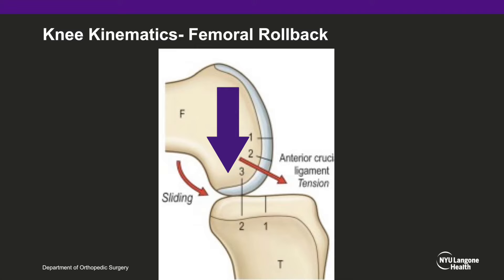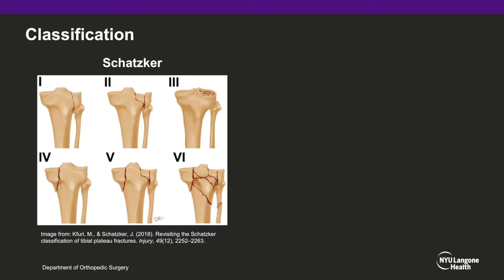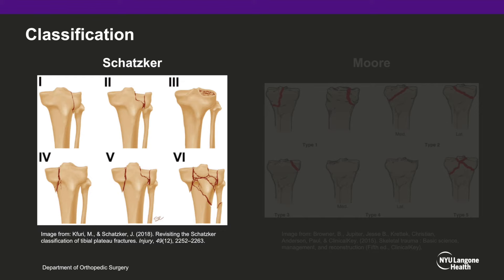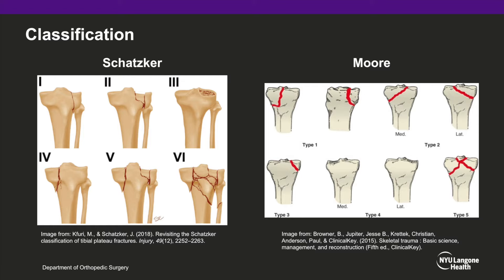The most common classification used for tibial plateaus is the Schatzker classification, based off AP radiographs of the knee. Schatzker type 1 is a lateral plateau split fracture; type 2 is a lateral split depression fracture; type 3 is a pure lateral depression; type 4 is a medial plateau fracture; type 5 is a bicondylar fracture; and type 6 is a metaphyseal-diaphyseal dissociation. Another popular classification is the Moore classification, which can be applied to fracture dislocation variants that do not fit into the Schatzker classification.